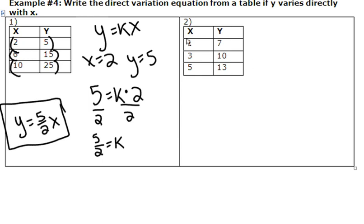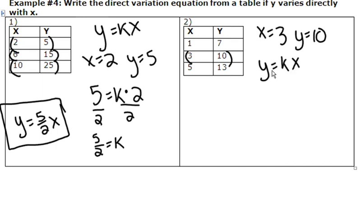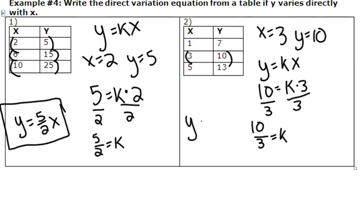Let's look at number 2 from the table. I'll use x equals 3 when y equals 10. The direct variation equation is y equals k times x, so y is 10 and x is 3. I solve for k by dividing by 3 — 10 over 3 doesn't divide evenly and can't be simplified, so it's just 10 thirds. My equation is y equals 10 thirds x. That was solving direct variation equations. We'll talk about graphing them tomorrow in class. Make sure you fill out the Google form and I will see you guys tomorrow.